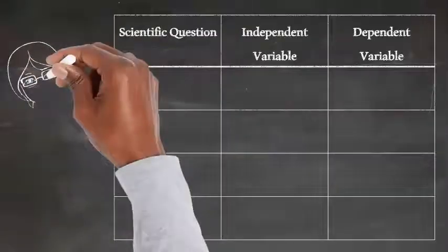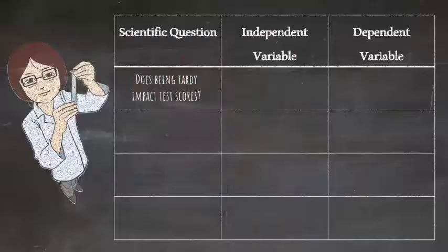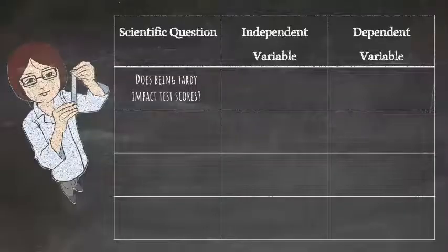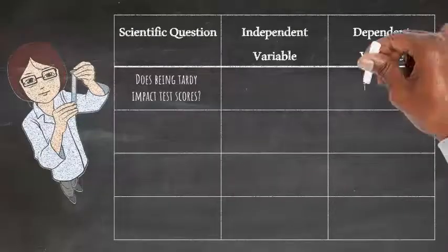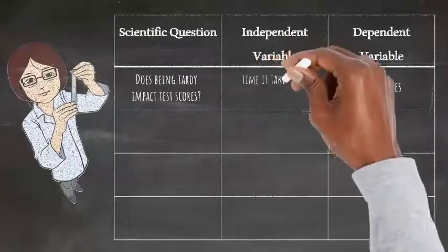Let's investigate some scientific questions. Does being tardy impact test scores? Well, the time it takes to get to class is independent and would have caused a change in the test scores. So test scores would be the dependent variable because it depends on the time it takes to get to class.